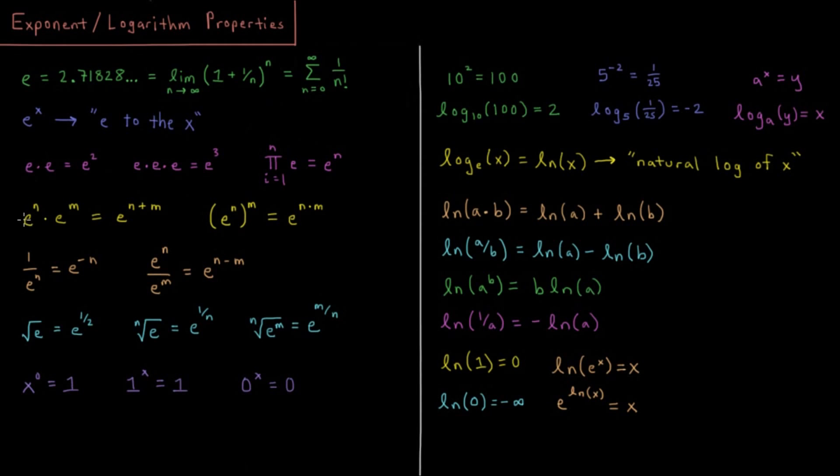So some interesting properties of exponentiation. When I have E to the n times E to the m, and all of these properties that I have listed here work for any general number as well, but I'm just showing them for E because E is a number that shows up so often in engineering and scientific applications. We have E to the n times E to the m, that's equal to E to the n plus m. So a product of two exponents is the sum of those exponents.